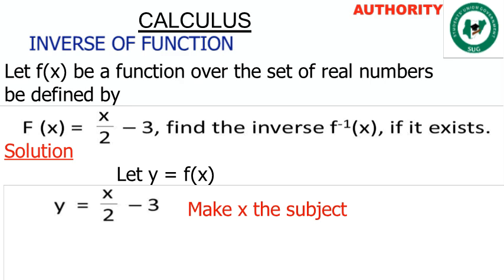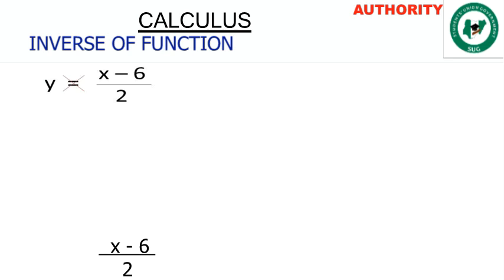To solve for x, we combine the right-hand side. Since x/2 − 3 is a fraction expression, we find the LCM, which is 2. So: 2 divided by 2 gives 1, and 1 times x gives x; then 2 divided by 1 gives 2, and 2 times 3 gives 6. So combined we have (x − 6)/2. We now have y = (x − 6)/2.